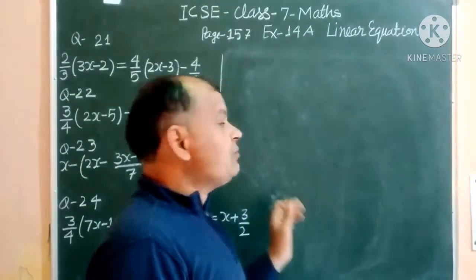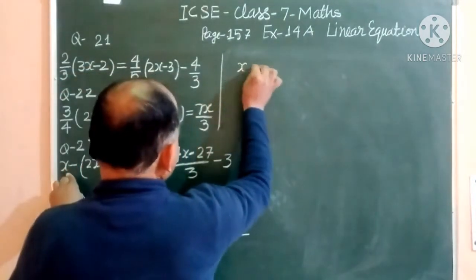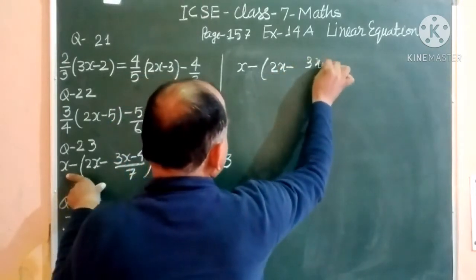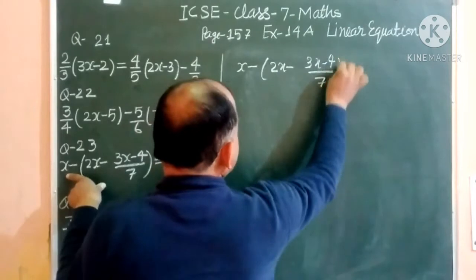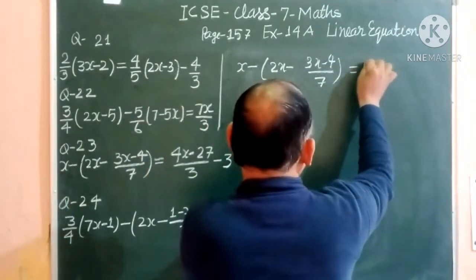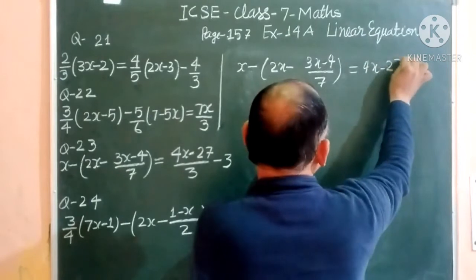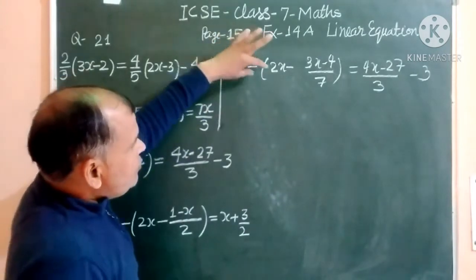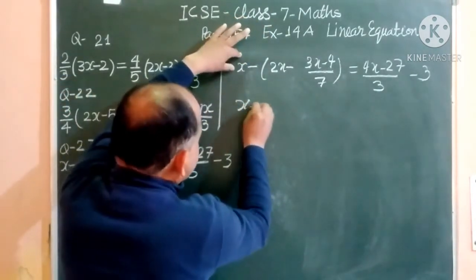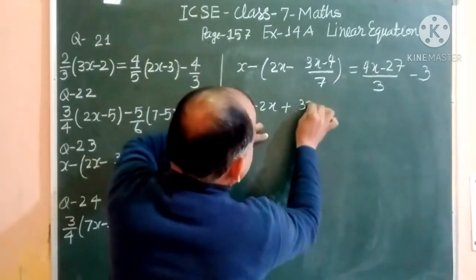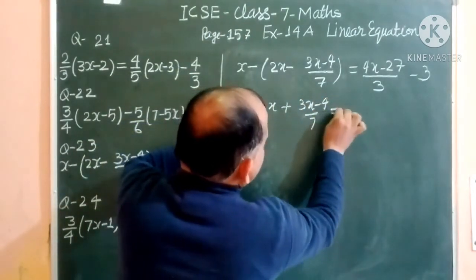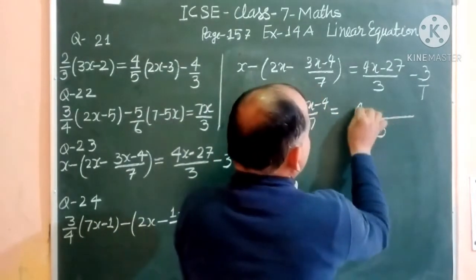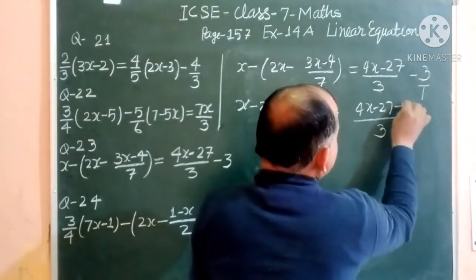Question 23 is: x - [2x - 3(x - 4)/7] = 4x/3 - 3. Opening the bracket we get x - 2x + 3(x - 4)/7. We take LCM 3 on the right side, so 4x - 27 over 3, and 3×3 = 9.